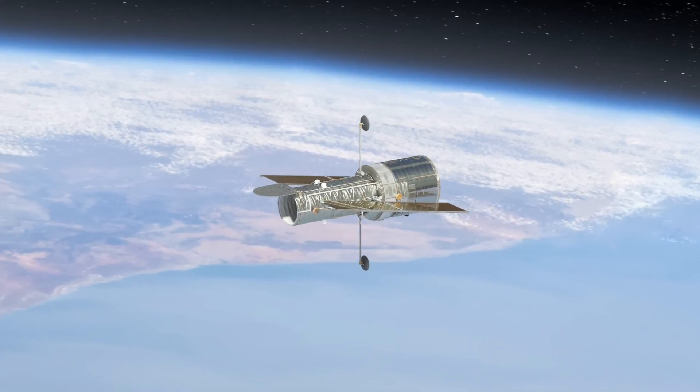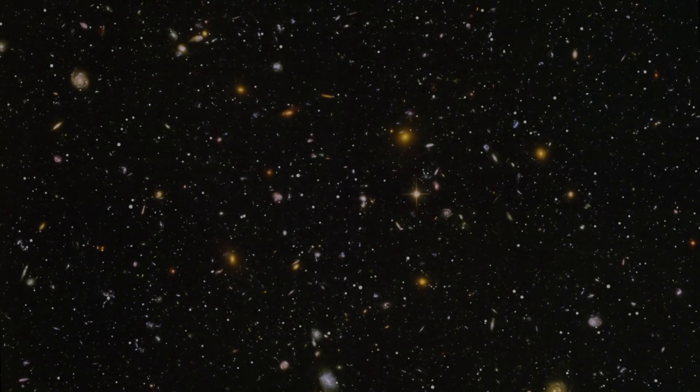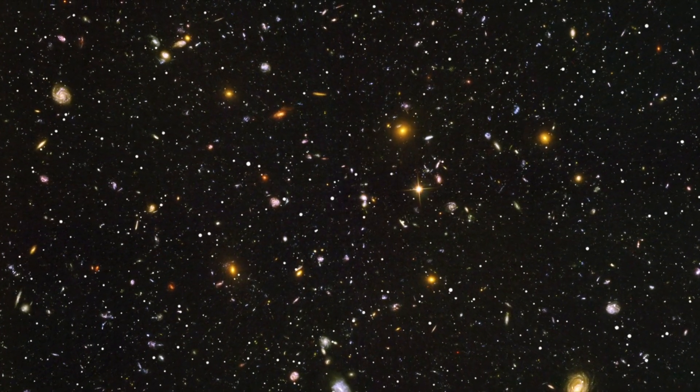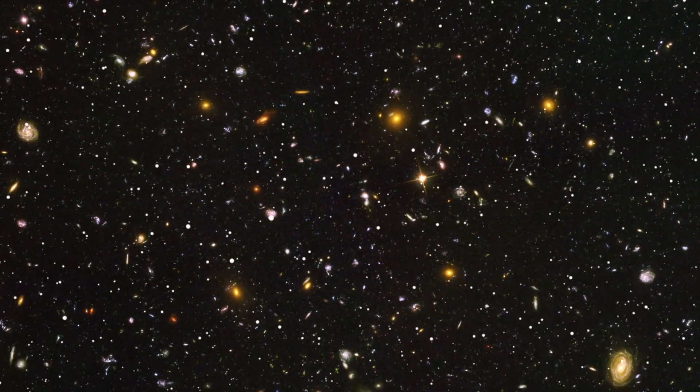It was taken by the Hubble Space Telescope in 1995, and it shows thousands of galaxies at varying distances, some of which are among the most distant and ancient ever observed.